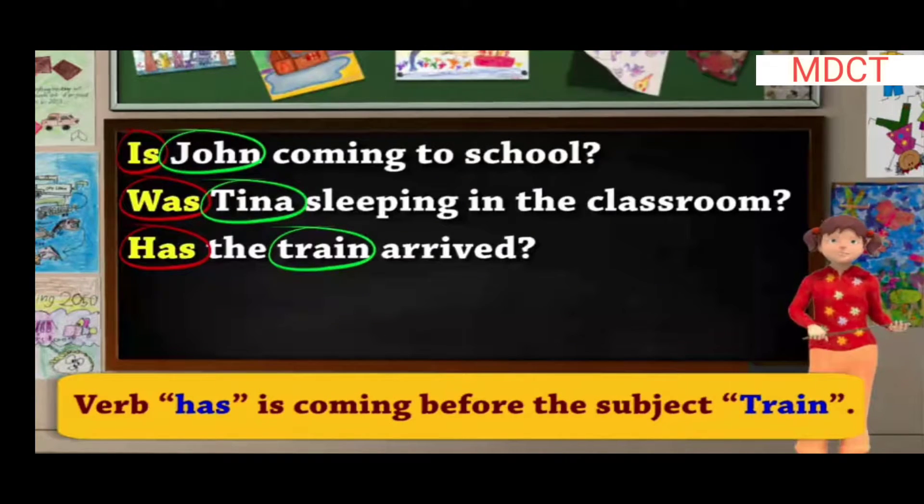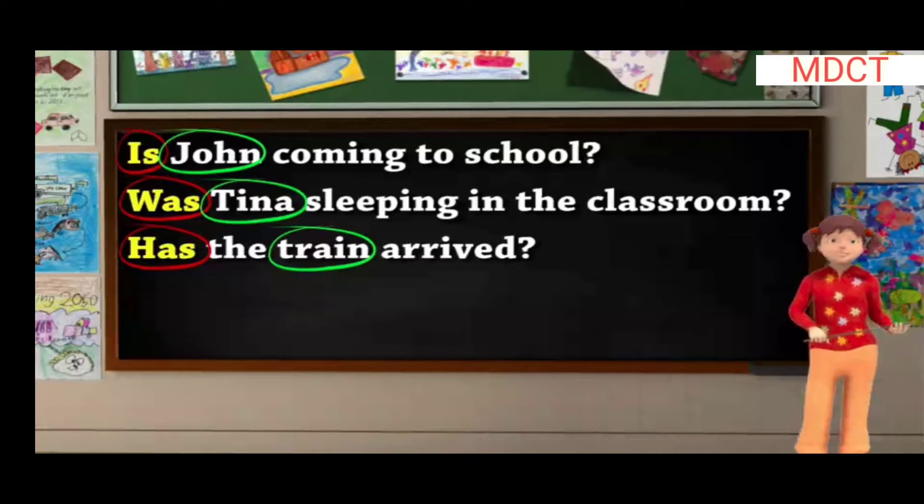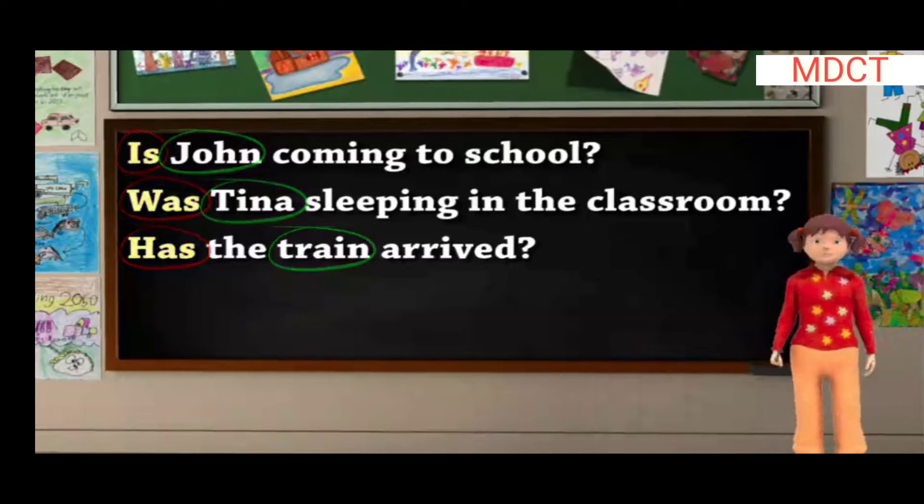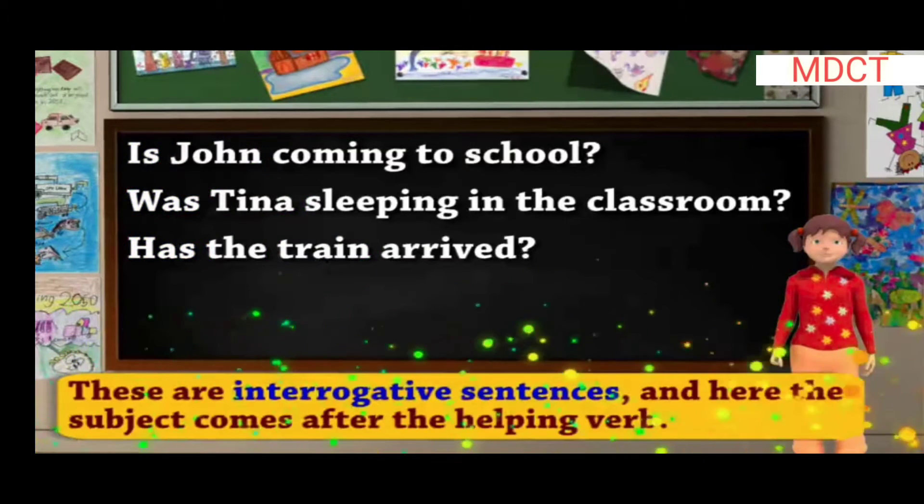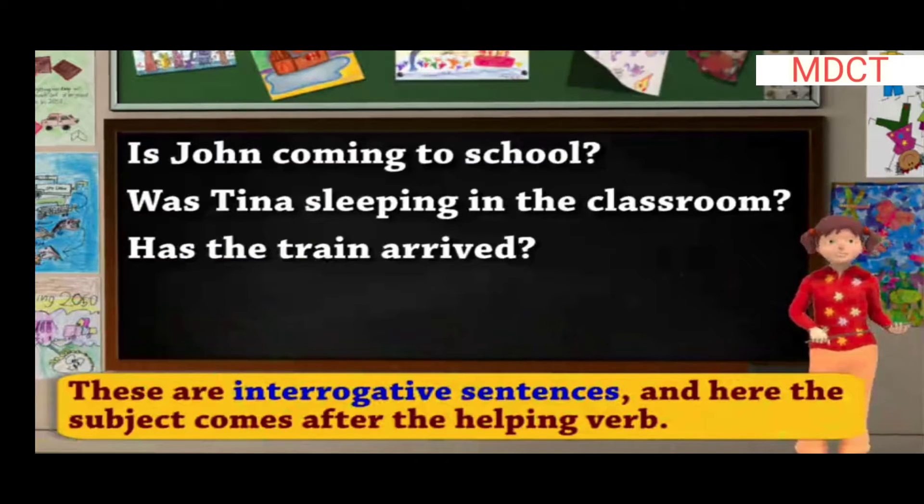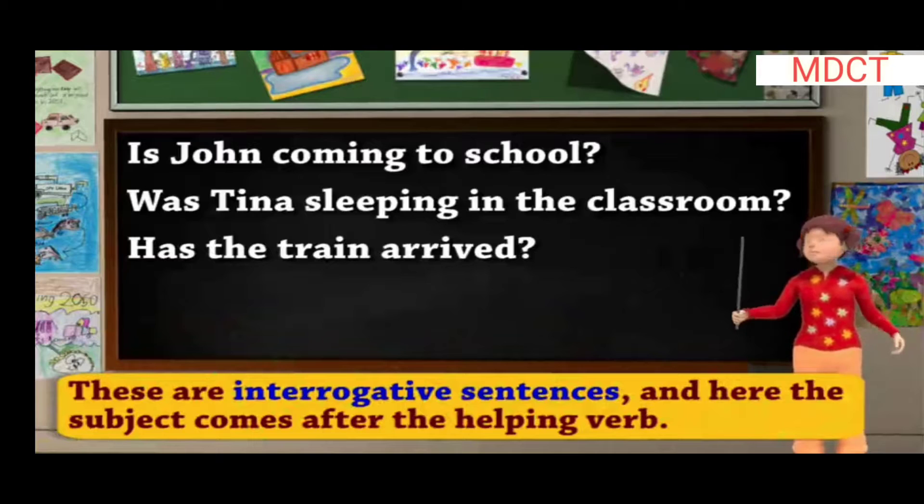Also note that is, was, has are helping verbs and not the main verb. Students, these are interrogative sentences. And here, the subject comes after the helping verb.